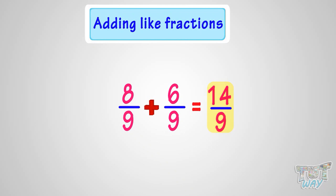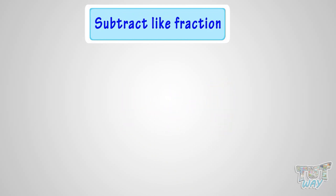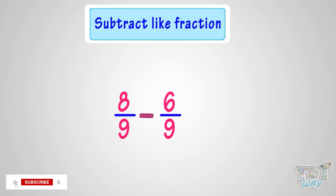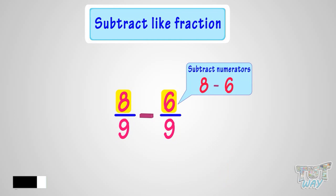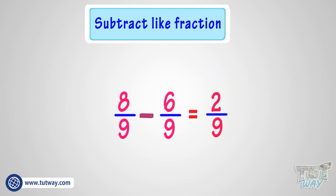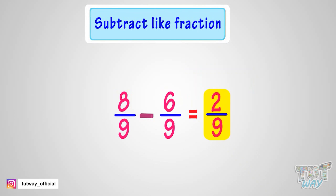Now let's see how we subtract like fractions. Here we have an example. We have to subtract 6 by 9 from 8 by 9. These are like fractions as denominators are same, both are 9. We just have to subtract the numerators to subtract the fractions. Subtracting the numerators, that is subtracting 6 from 8, we get 2. So 2 by 9 is the difference between the 2 fractions, 8 by 9 and 6 by 9.